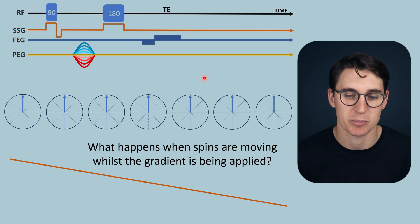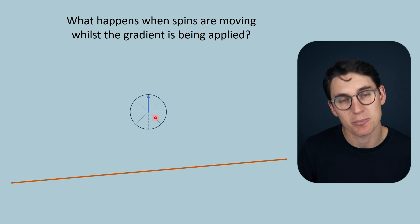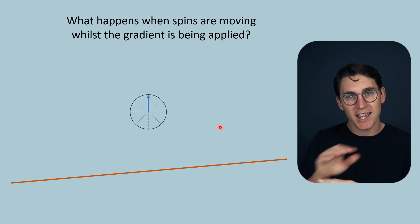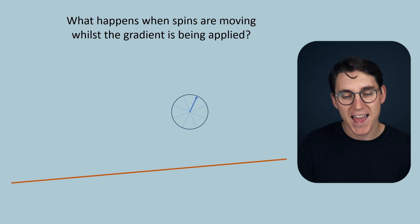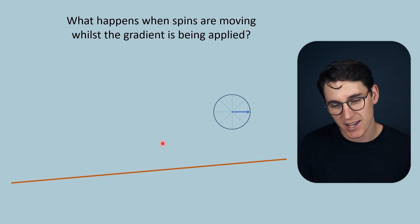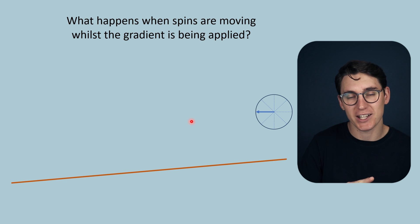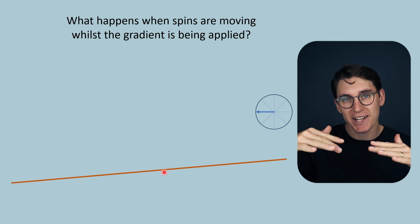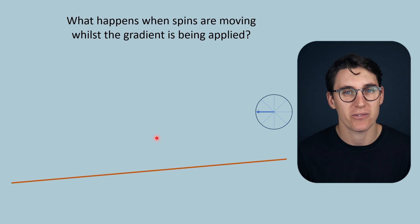If we take a spin at the null point that is moving at a constant velocity parallel to the gradient — as in blood vessels — it will accumulate phase as it moves across that gradient. Importantly, the phase accumulation is not linear; it is actually exponential. If the velocity of that spin is constant throughout the gradient and the gradient strength remains constant, we can predict this phase change. That is the basis of the spin phase effects.